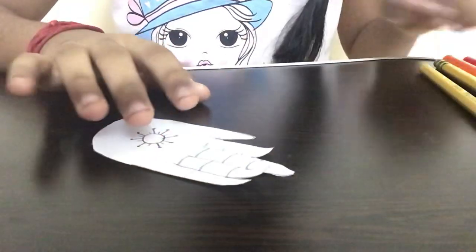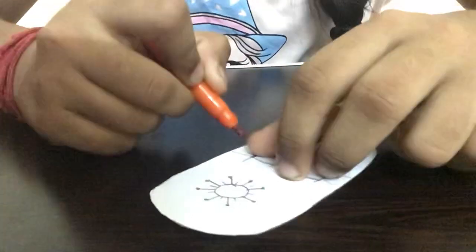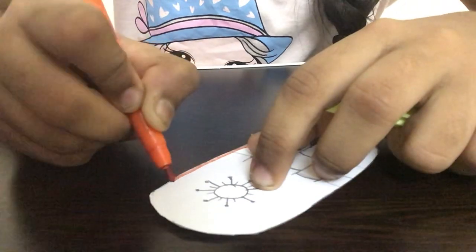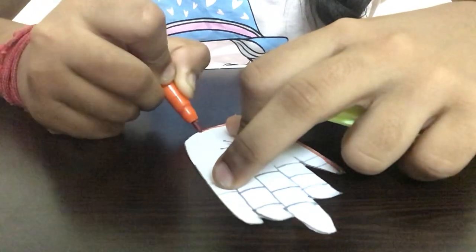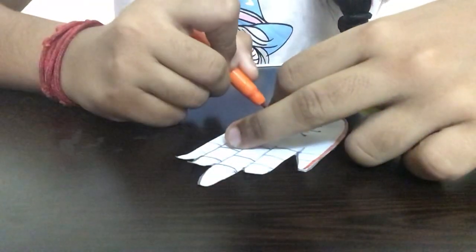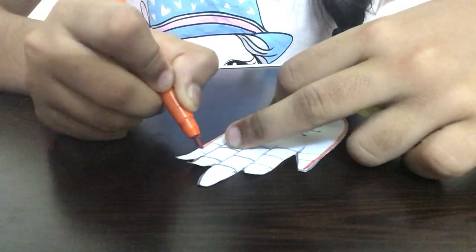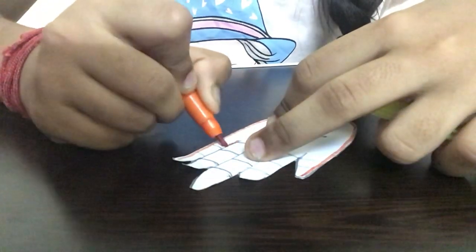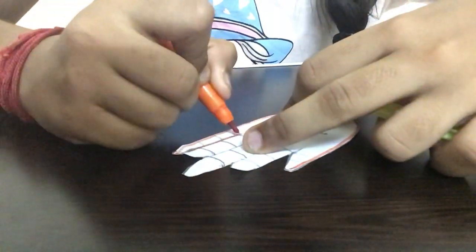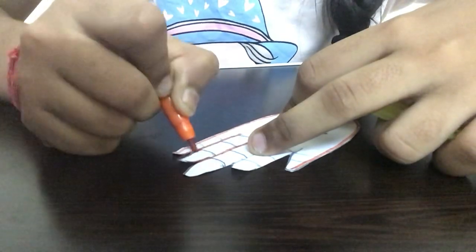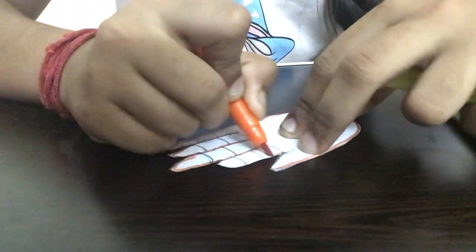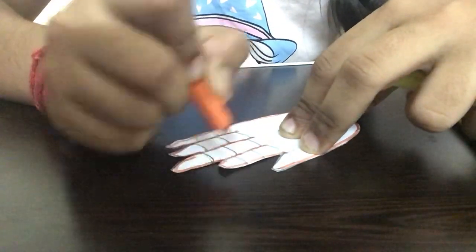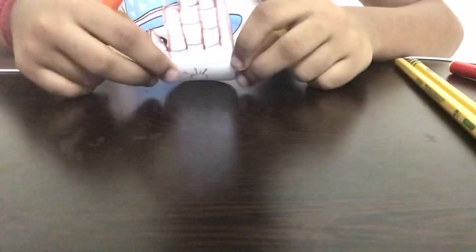Now I'm taking an orange marker and I'm giving an outline to the hand like this. I have to do it slowly. So now I've completed.